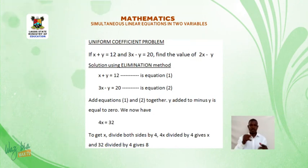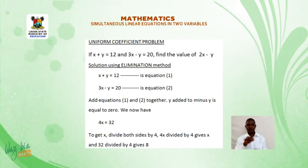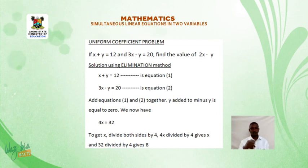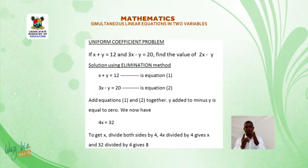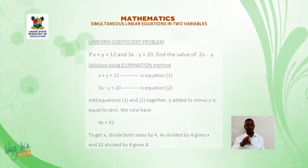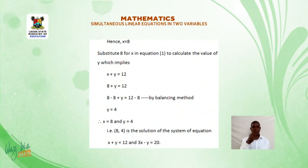y added to minus y is equal to 0. We now have 4x is equal to 32. To get x, divide both sides by 4. 4x divided by 4 gives x, and 32 divided by 4 gives 8. Hence, x is equal to 8.